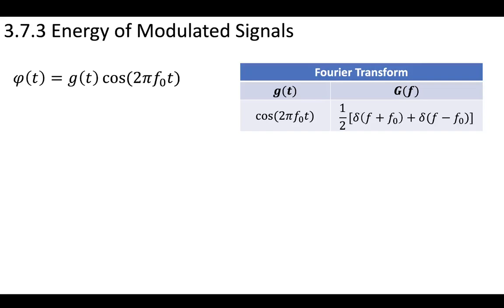In this class, we're going to be dealing with a lot of modulated signals, so it's important to determine how the relationship works between the energy of a modulated signal and the original signal. The modulation means we've multiplied the original signal by a cosine with some frequency f-naught, so that the original signal becomes spread out in the frequency domain, now centered at f-naught and minus f-naught.